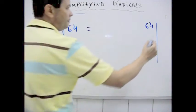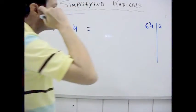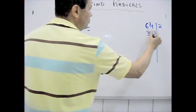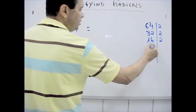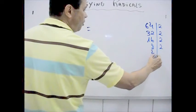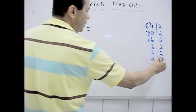64 divided by 2 is 32, divided by 2 is 16, by 2 is 8, by 2 is 4, by 2 is 2, by 2 is 1.